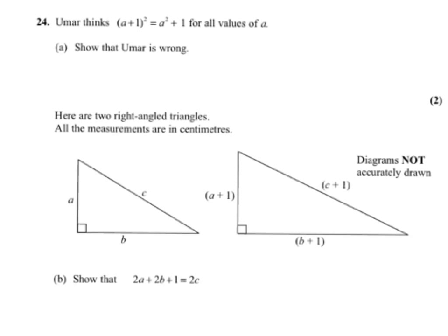Umar thinks that (a+1)² equals a² + 1 for all values of a. Show that Umar is wrong. Now, to prove that something's wrong, you just have to take an example.